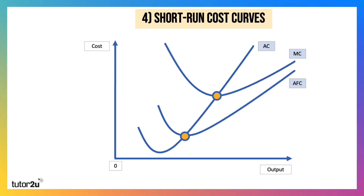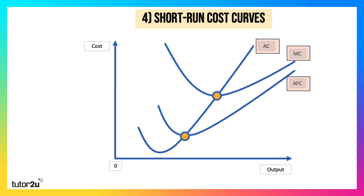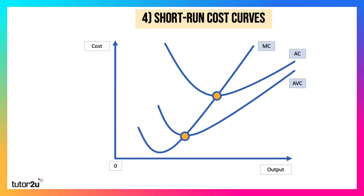Here's number four: short-run cost curves. The cost curves have been labelled incorrectly — average cost and marginal cost drawn incorrectly; they need to flip. And that third curve is not average fixed cost; it is average variable cost. Marginal cost always cuts average from below — average variable and average total cost. The AVC curve converges to average total cost because fixed cost per unit falls as output goes up.